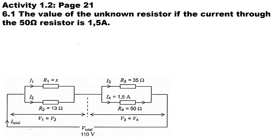In question 6.1 we need to determine the value of the unknown resistor, given that the current through the 50 ohm resistor is 1.5 amps. To solve for R1 (or Rx), we need to determine the value of i1. We should also know the volt drop across each parallel branch — V_parallel1 and V_parallel2 — since V_parallel1 plus V_parallel2 equals the total voltage in this DC circuit.